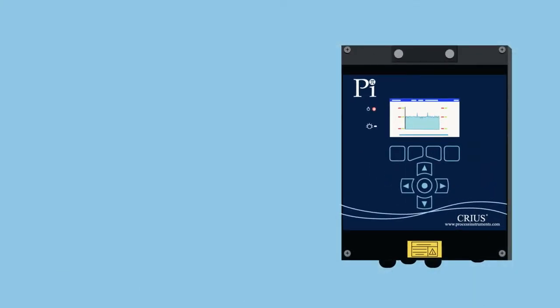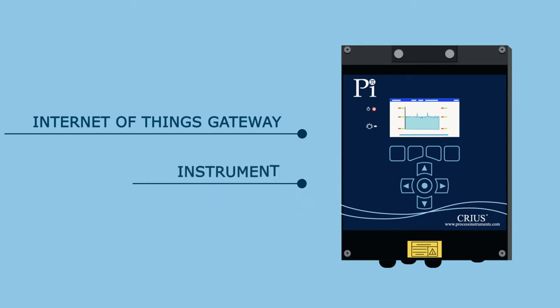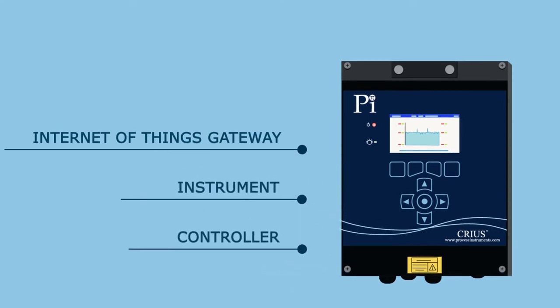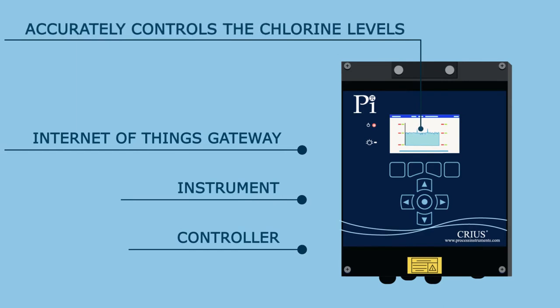The Cryos 4.0 is a versatile all-in-one analyzer that is also an IOT gateway, an instrument, and a controller, which can accurately control the chlorine levels in Bob's wash water.